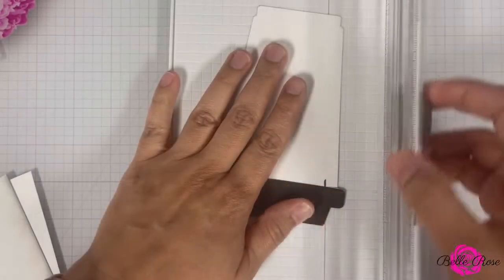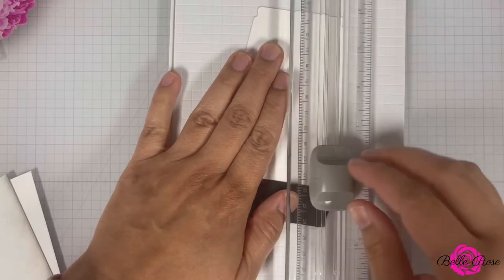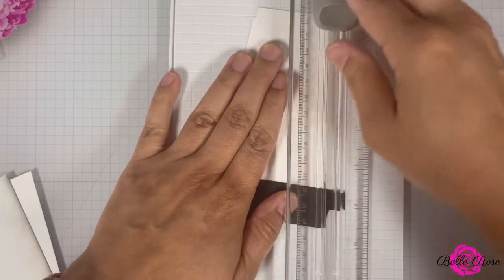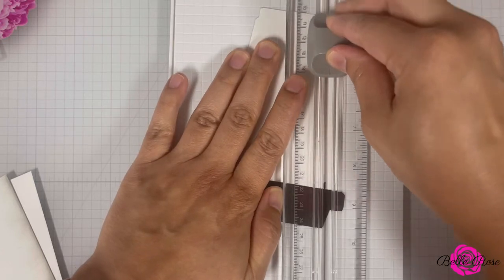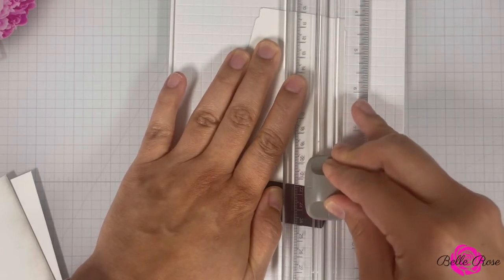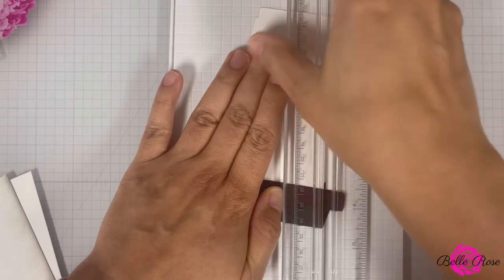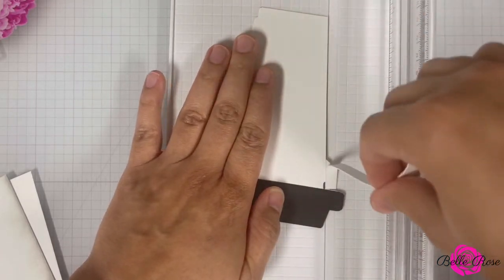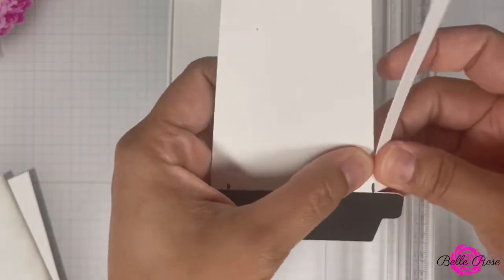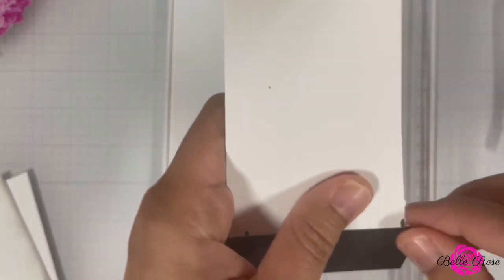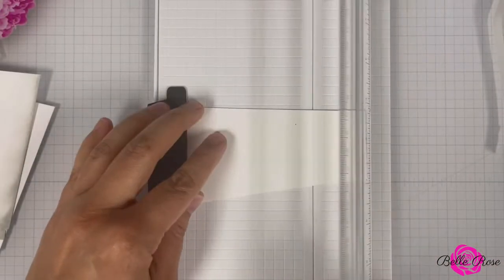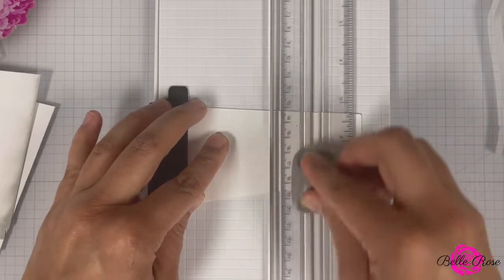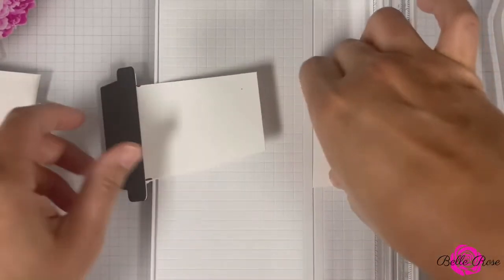I'm now going to bring in my paper trimmer to trim off the edge of the coffee cup. I did eyeball the placement of the markings on each end of this coffee cup, but you can feel free to mark it at an eighth of an inch on each side. Once I'm done removing the edge of the coffee cup, I'm then going to remove a little piece from the bottom, about an inch.